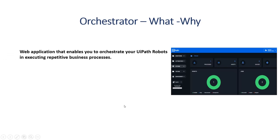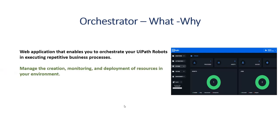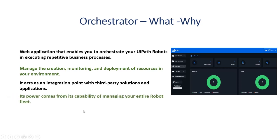The last component is the UiPath Orchestrator — a web application that enables you to orchestrate your UI robots in executing repetitive business processes. It allows you to monitor, deploy, and manage resources, create assets, and acts as a single integration point with third-party solutions. It comes with the capability of managing your entire robot fleet — from testing to automation monitoring — and even has a mobile app for managing robots on the go.